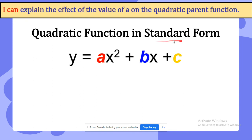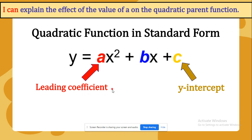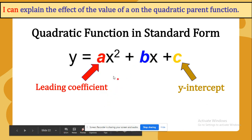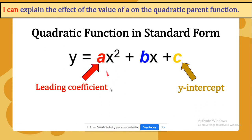The quadratic function in standard form is y equals ax power of 2 plus bx plus c. You should focus on two points: the standard form should have a, b, and c, and it should have a power of 2. The a is the leading coefficient and c is the y-intercept. If a is positive, the parabola will be facing up, and if a is negative, the parabola will be facing down. This has something to do with the vertex as well.